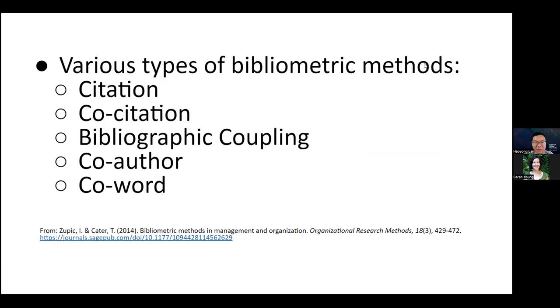Next, we are going to talk about some types of bibliometric methods. These involve citation, co-citation, bibliographic coupling, co-author, and co-word.